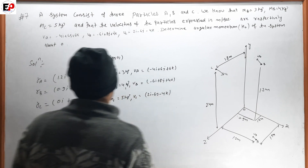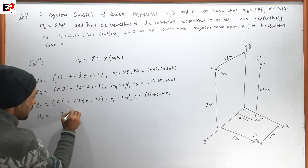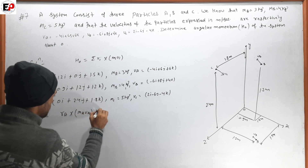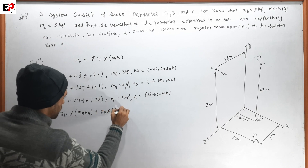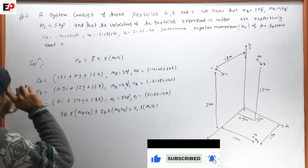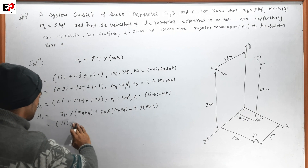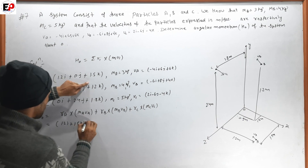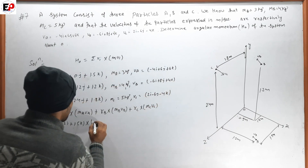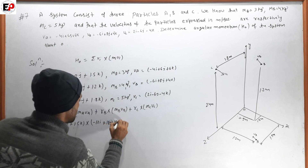The formula is H₀ = rA cross mAvA plus rB cross mBvB plus rC cross mCvC. For the rA term: rA = 1.2i + 0j + 1.5k cross mAvA, giving components. The result for this term gives minus 12i plus 18j plus 18k.